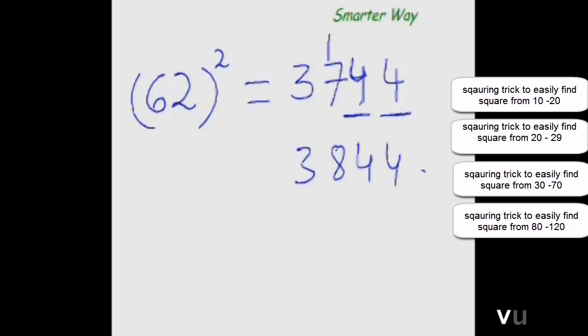Now what if the numbers of which we are trying to find the square is less than 50. Then what would we do? Just the same technique with slight modification. Let's see.